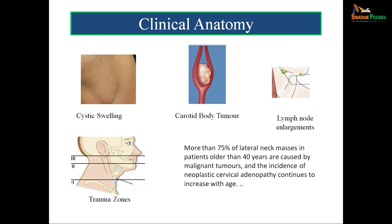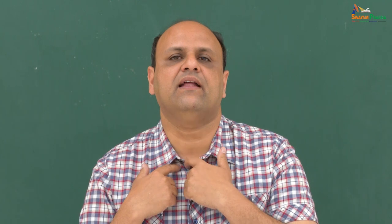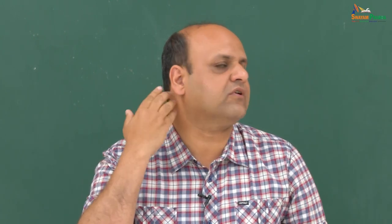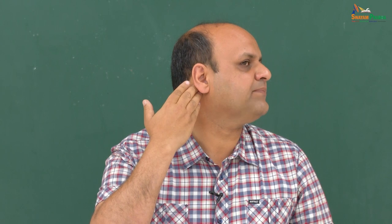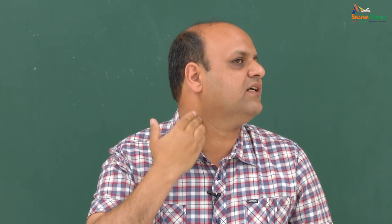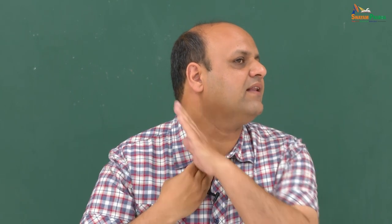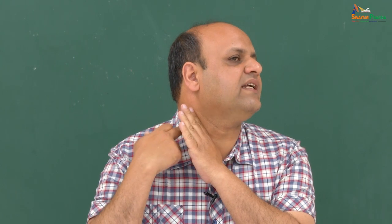The neck is divided arbitrarily into two triangles: the anterior triangle and the posterior triangle. The line of demarcation is a muscle called the sternocleidomastoid. As the name indicates, it arises from the sternum and the clavicle and gets attached to the mastoid process. From the mastoid process to the sternum and clavicle, this muscle separates the anterior triangle from the posterior triangle.